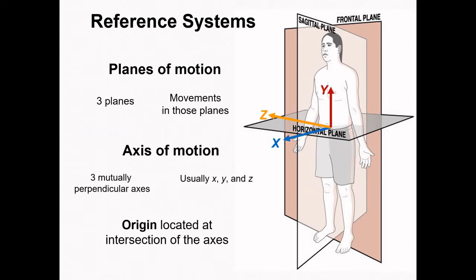The commonly used reference system also specifies three axes of motion. We can use these axes as a reference frame for defining both translations and rotations. For example, we can talk about movement in the x direction, and we can also talk about rotation about the x axis. The origin of the x, y, and z coordinate systems is located at the intersection of the axes.